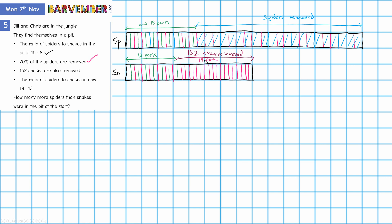We now have a value and a number of parts. So if I do 152 divided by 19 — Alexa, 152 divided by 19. 152 divided by 19 is 8. Fabulous. So that tells me that each of these parts has a value of 8.